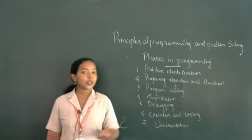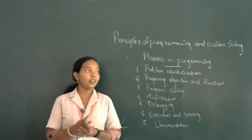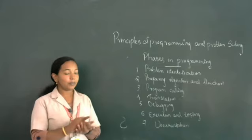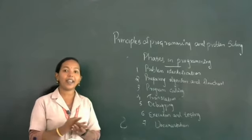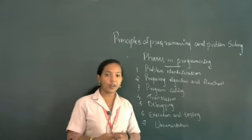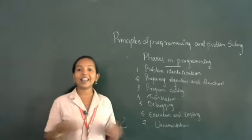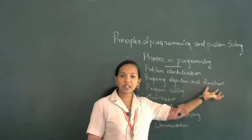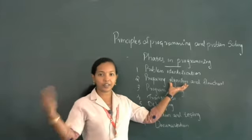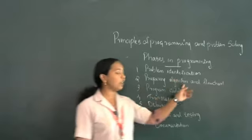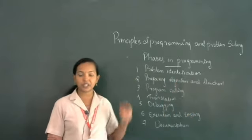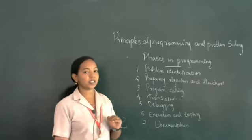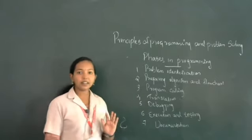The second step is preparing algorithm and flowchart. Just as you want to draw a design plan before constructing a house, before program coding we require a design or layout for problem solving. For that we use algorithm and flowchart. The algorithm is a step-by-step procedure for executing the problem solving, and the flowchart is the pictorial representation of the algorithm.